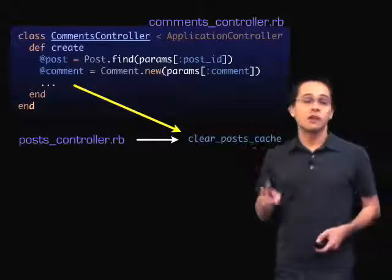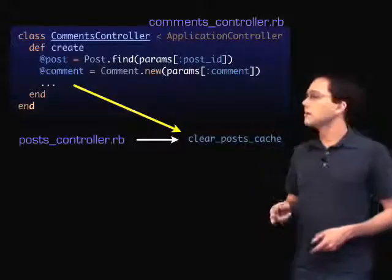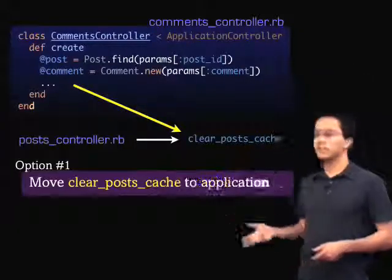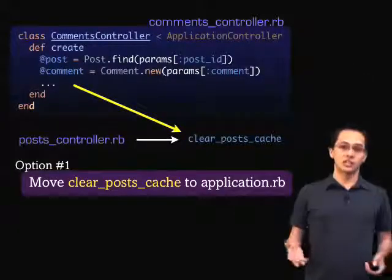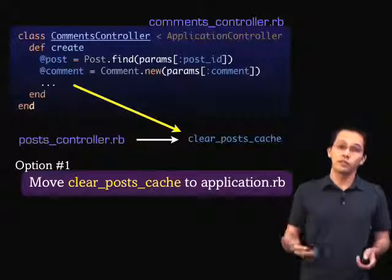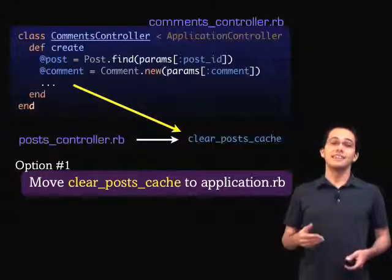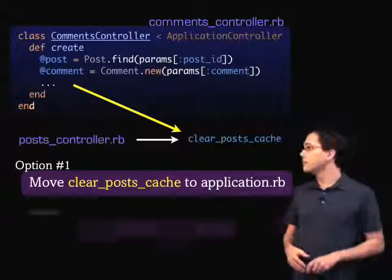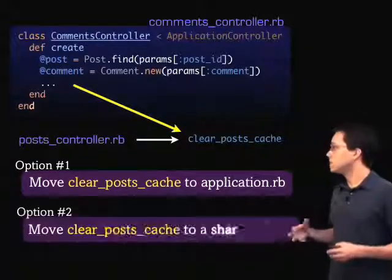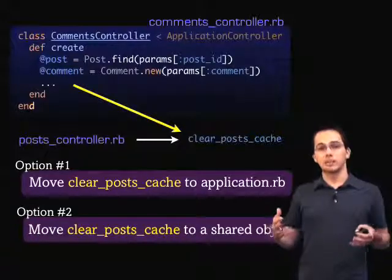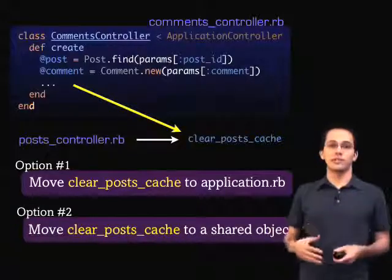We've got two options. Basically, we could move this function into the application.rb so all of our controllers would have access to it. And the second option would be to create some sort of shared object that both these controllers have access to.